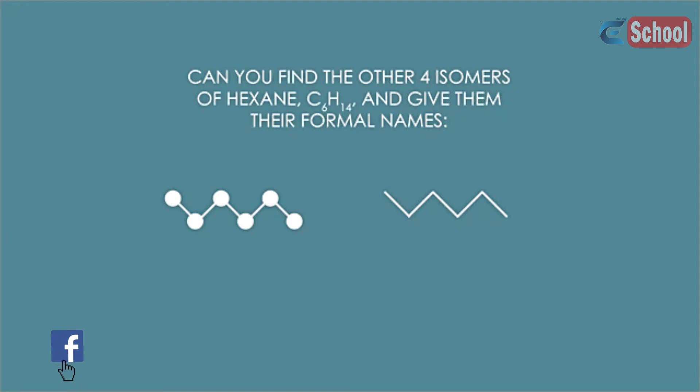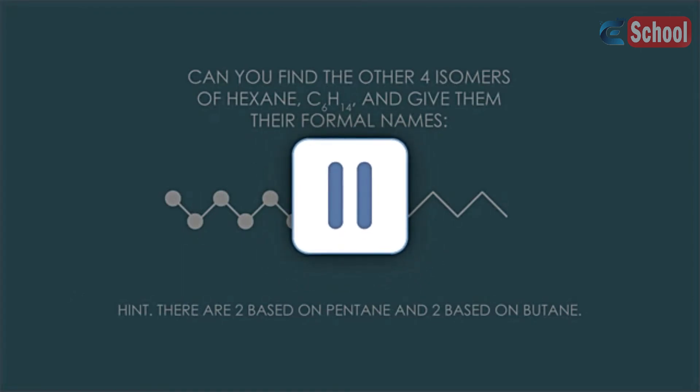So let's finish with a simpler example. Can you find the other four isomers of hexane C6H14 and give them their formal names? I'll give you a hint: there are two based on pentane and two based on butane. Pause whilst you try to draw them out.